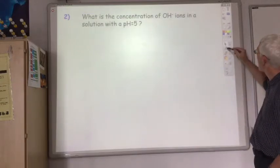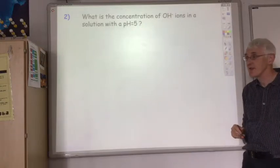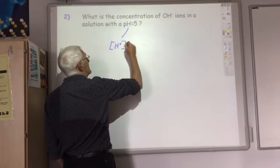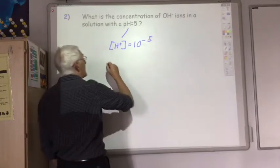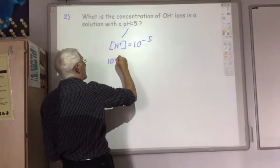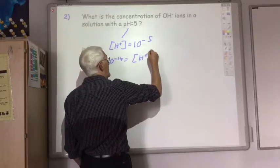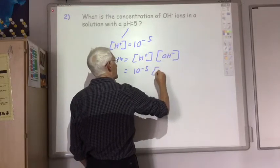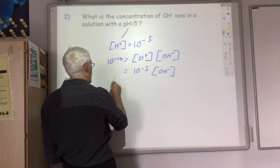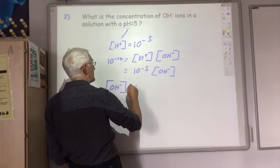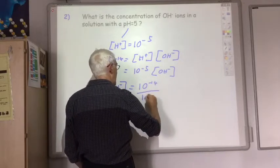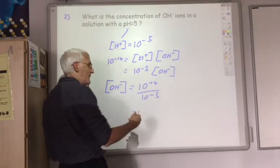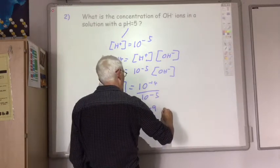Second example: what is the concentration of hydroxide ions in a solution with a pH of 5? A pH of 5 tells us the hydrogen ion concentration is 10 to the minus 5. So 10 to the minus 14 equals 10 to the minus 5 times the hydroxide ion concentration. Rearranging, the hydroxide ion concentration equals 10 to the minus 14 divided by 10 to the minus 5, giving minus 14 plus 5, so 10 to the minus 9 moles per litre.